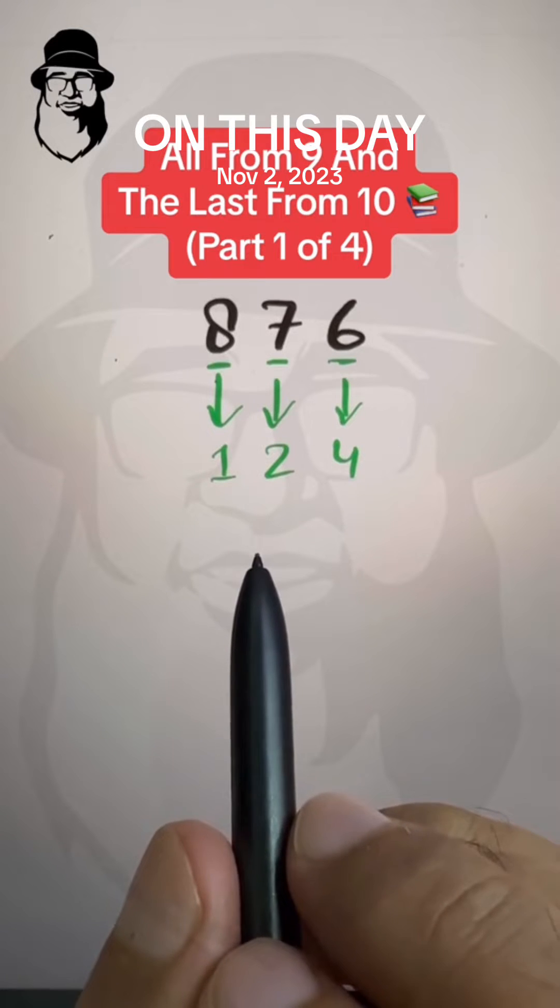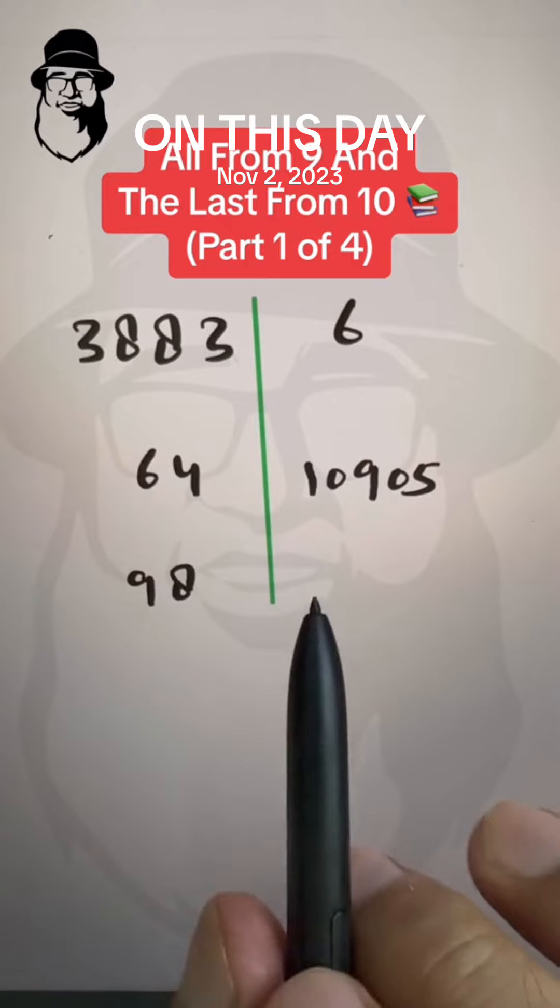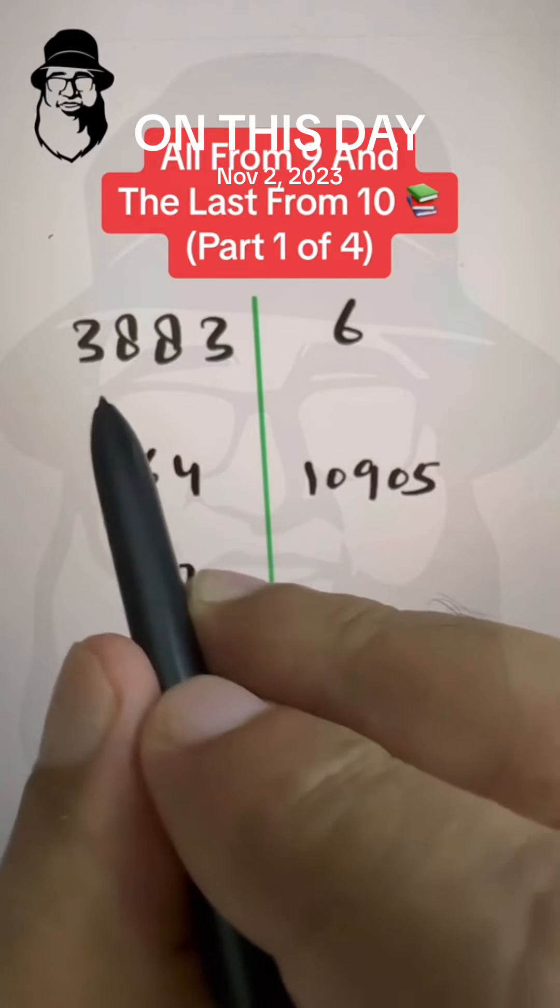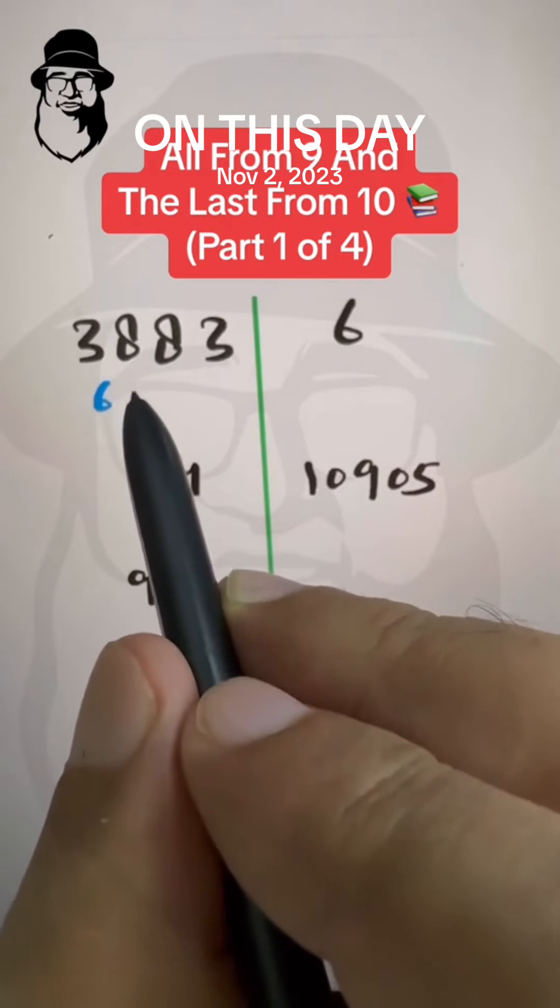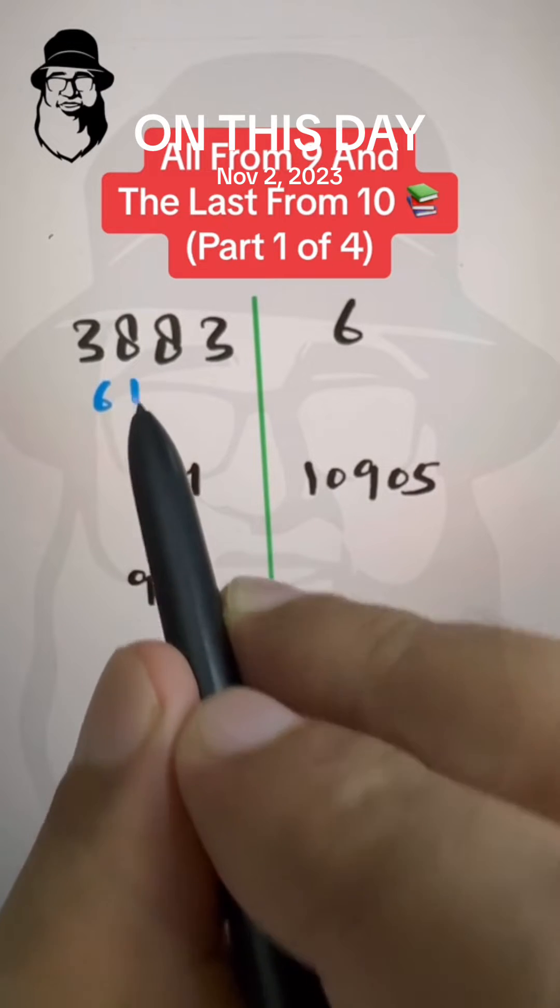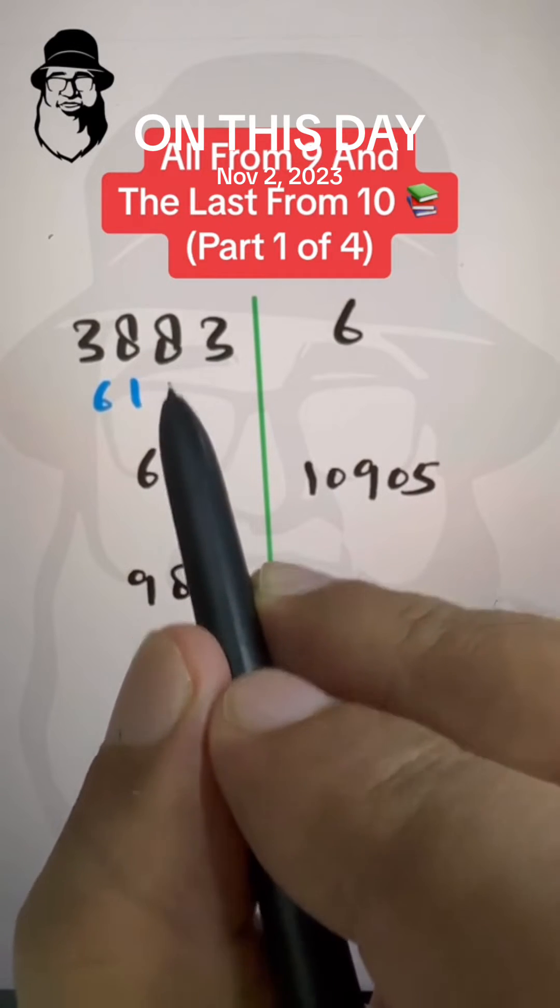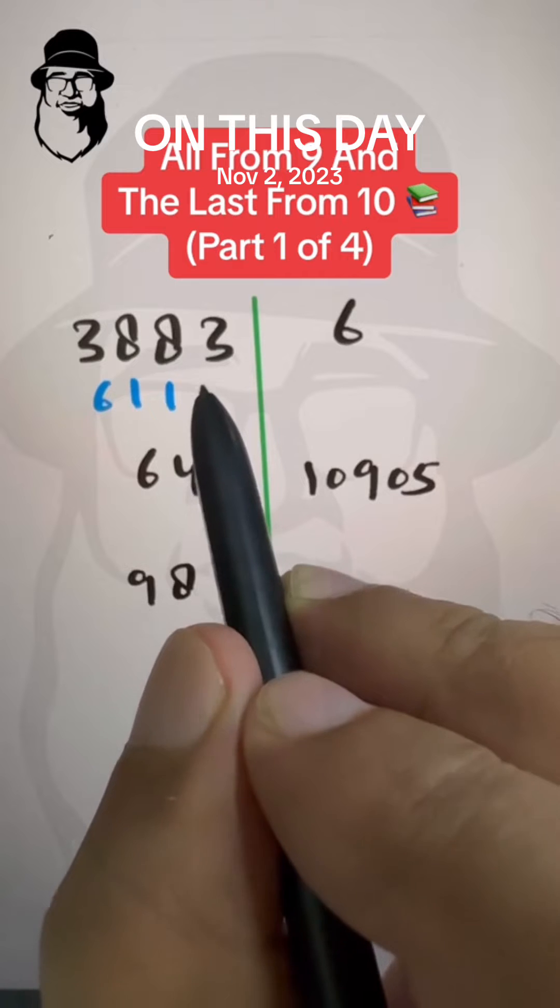Let's do some examples to hit the idea home. Let's apply the formula on these numbers. Here, 3 from 9 is 6, 8 from 9 is 1, then 8 from 9 is 1, and 3 from 10 is 7.